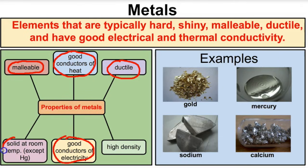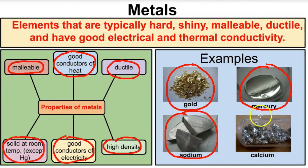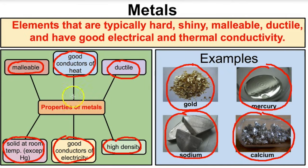Most metals are going to be solid at room temperature. In fact, all of them with the exception of mercury are solids at room temperature — mercury is a liquid at room temperature. Metals typically have a high density. Some examples of metals here: gold, mercury in its liquid state, a few chunks of sodium, and some calcium.